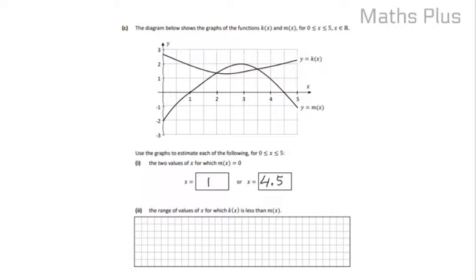All right, on to part two now. Find the range of values for which k of x is less than m of x. So we need to find out the range of values where... let's interpret this. So we want the x values down here where k of x correspond to where the graph is lower than the graph of m of x.